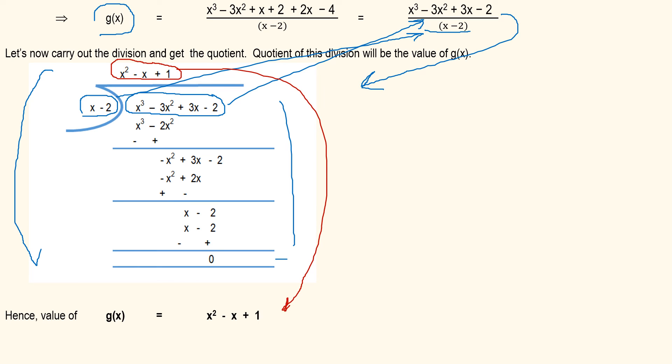So we have now found out g(x) = x² - x + 1, and this is our answer.